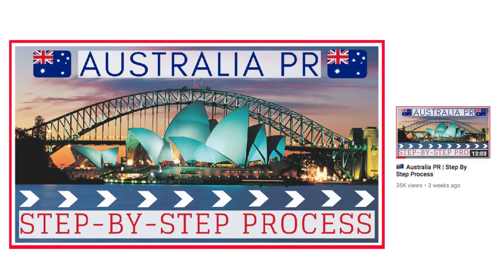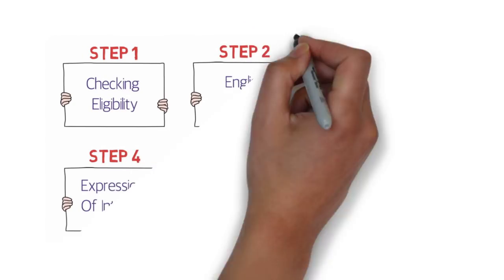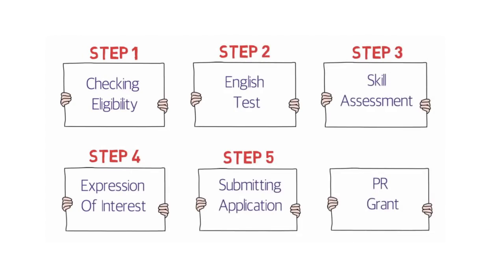Before I proceed, let me mention the other video I posted three weeks ago about the step-by-step process. In this video I'll break down the total cost into those steps. I'll provide the link in the description box below. In that video I divided the complete process into five steps: step one was checking eligibility, step two was the English test, step three was skill assessment, step four was the expression of interest, and step five was submitting the application, after which you are granted the PR.